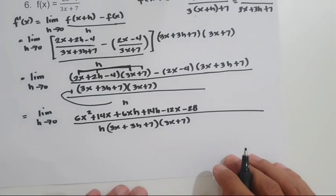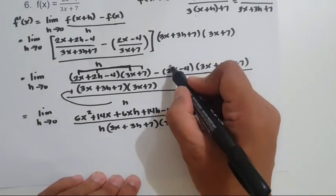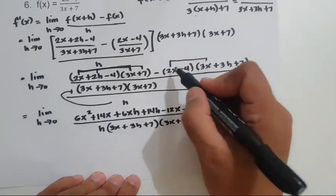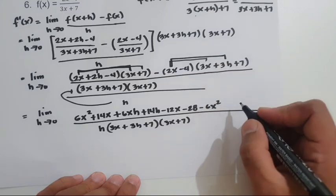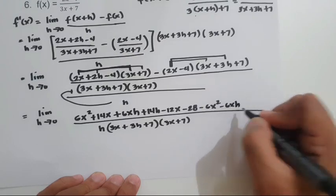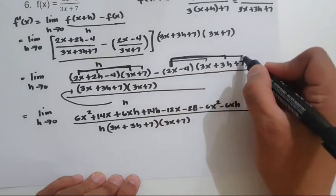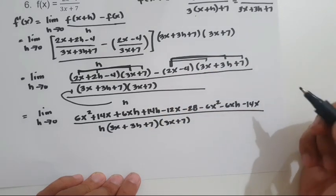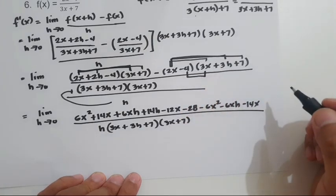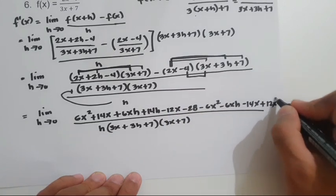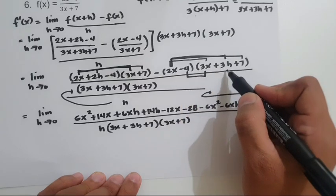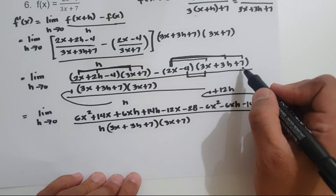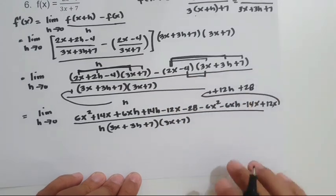Now expanding negative (2x minus 4)(3x plus 3h plus 7): 2x times 3x gives negative 6x squared, 2x times 3h gives negative 6xh, 2x times 7 gives negative 14x, negative 4 times 3x gives positive 12x, negative 4 times 3h gives positive 12h, and negative 4 times 7 gives positive 28.